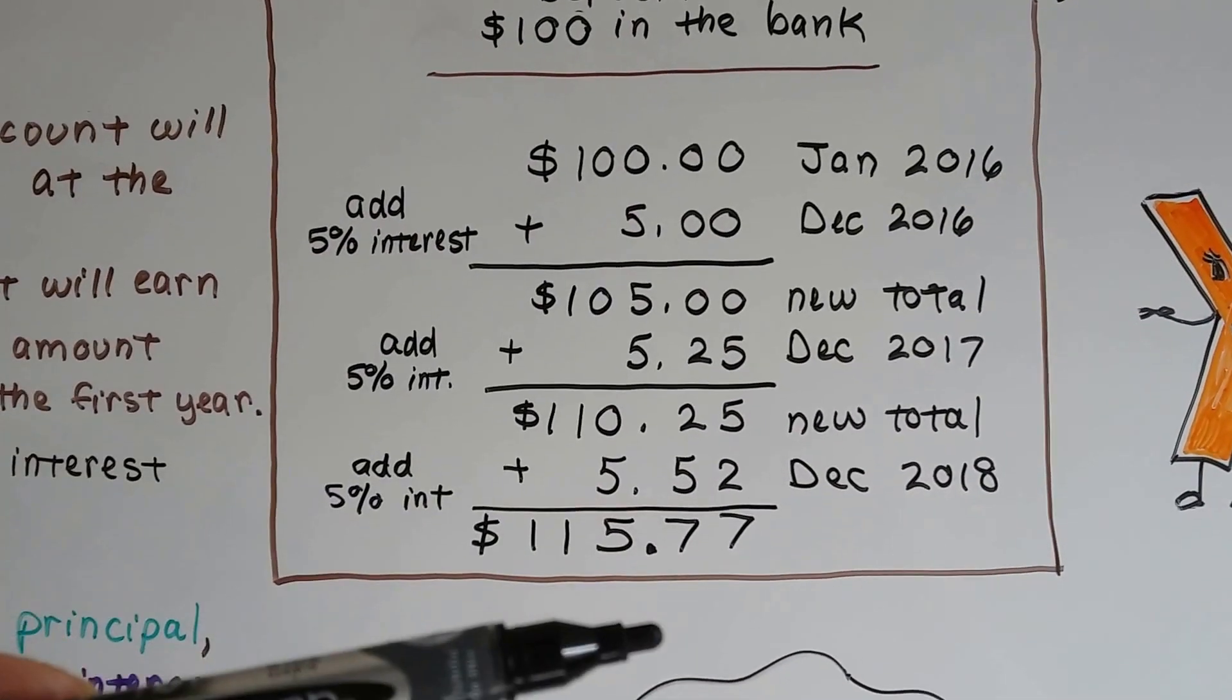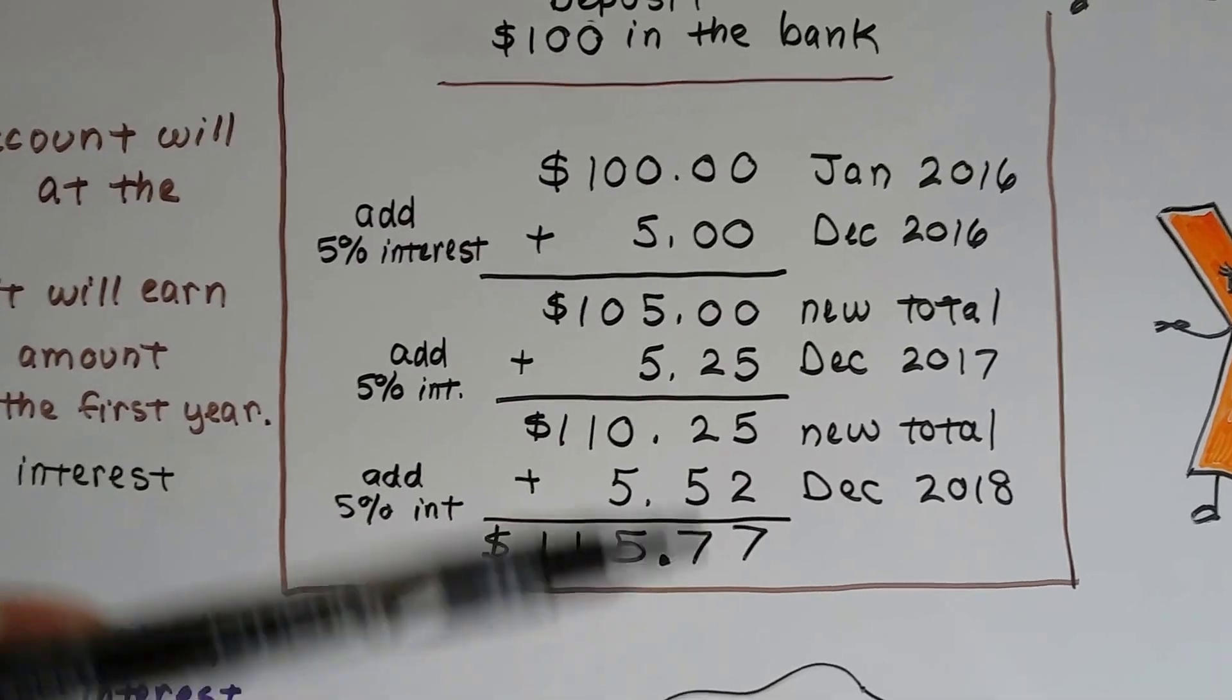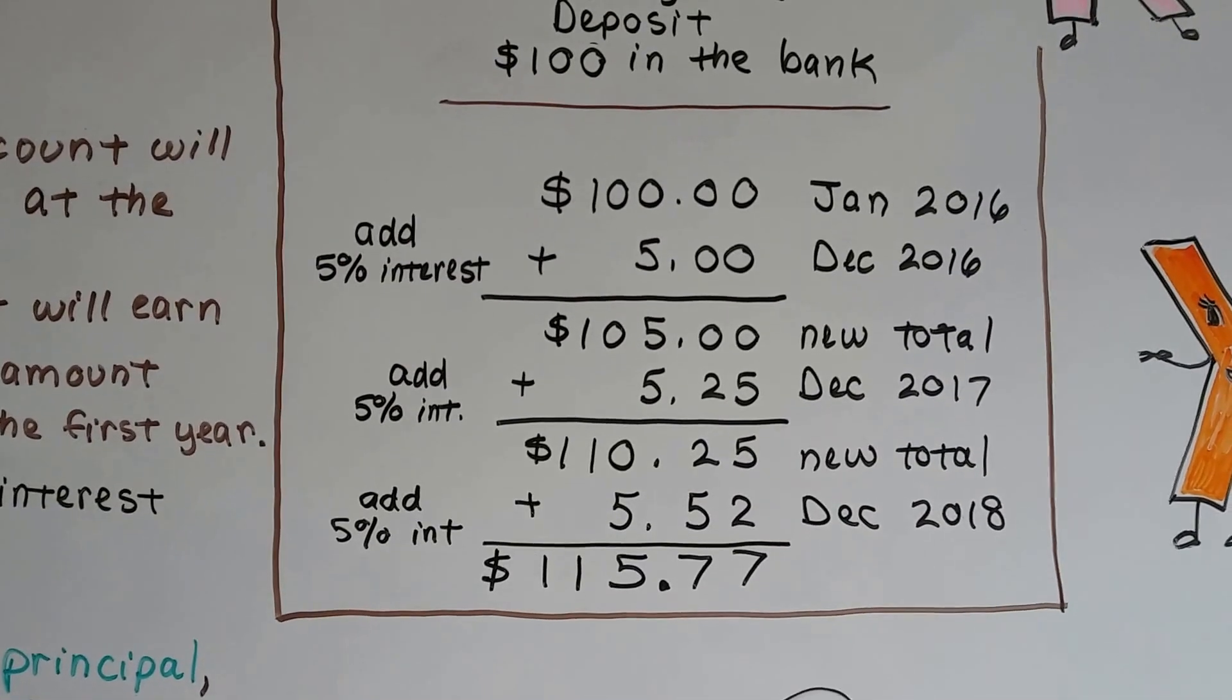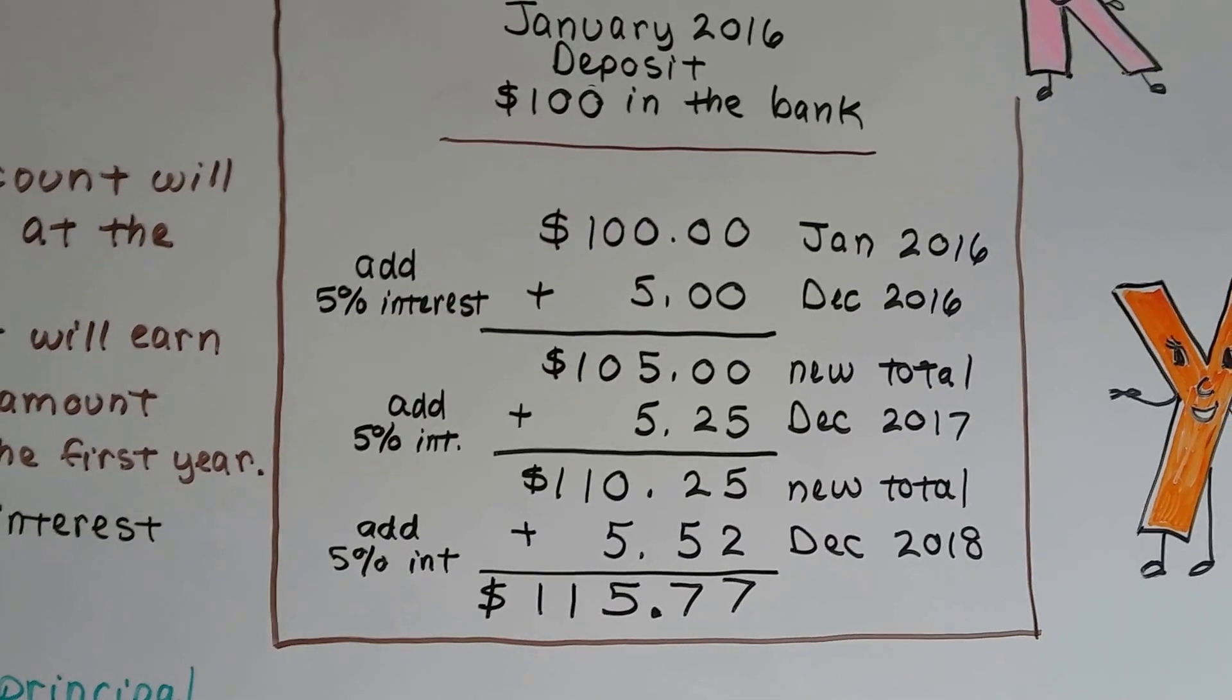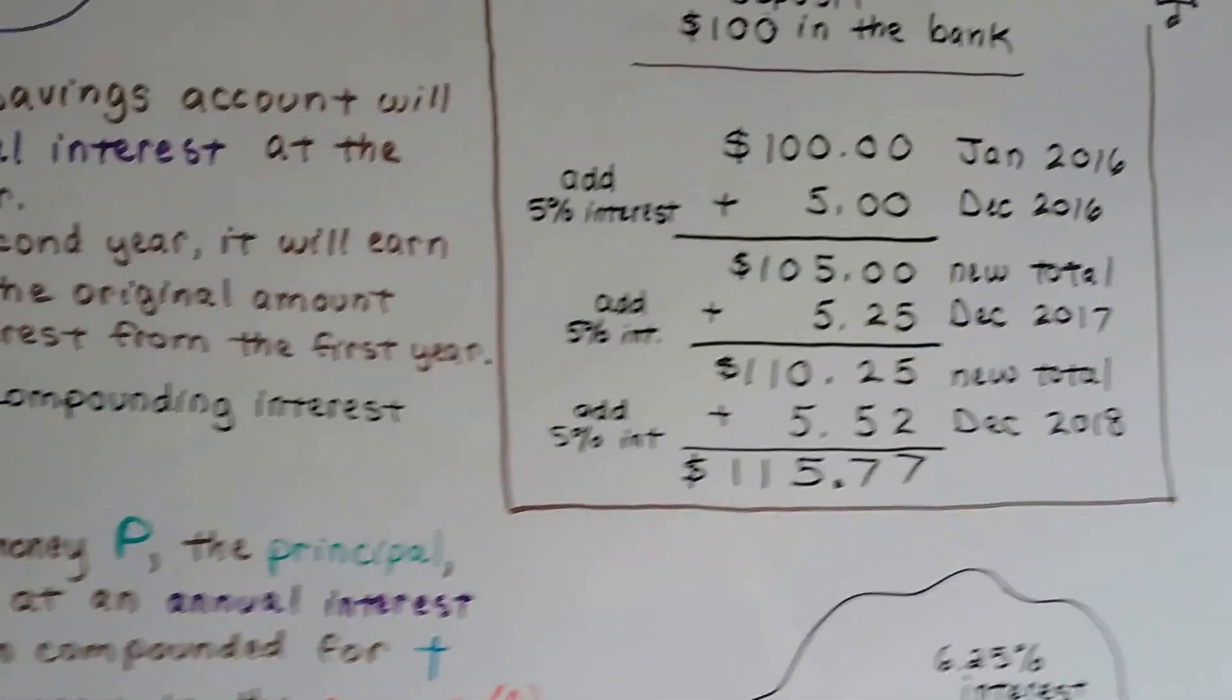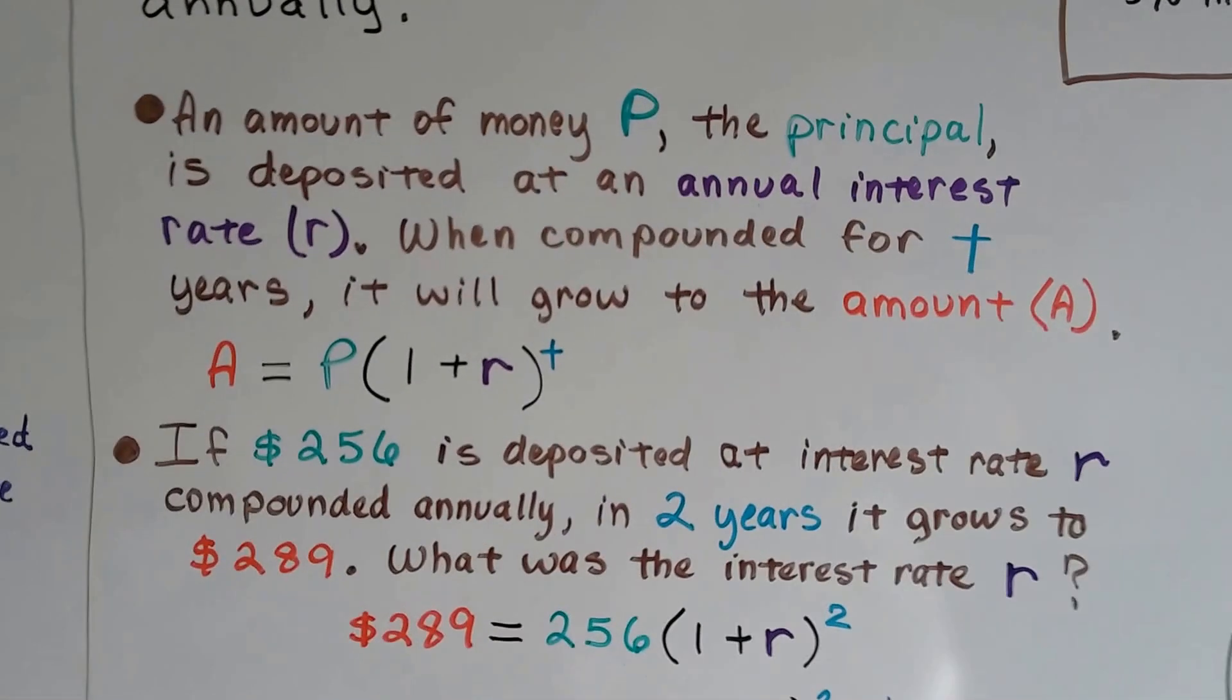So each year, the interest is going to get bigger because the balance is growing from the previous year's interest. I know this can be confusing, but I wanted to show you that, so that you'd kind of understand what's going on here.